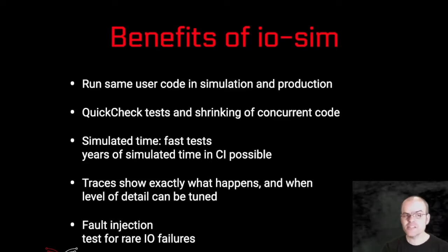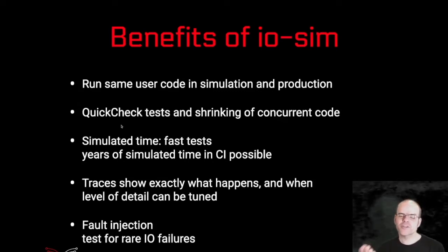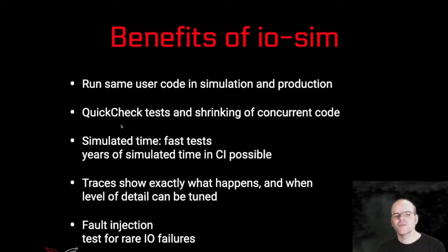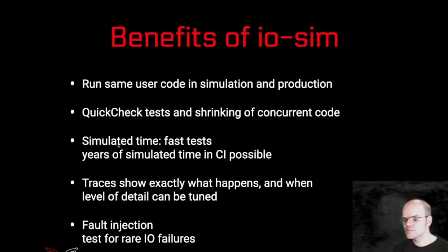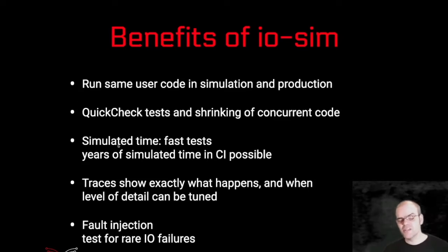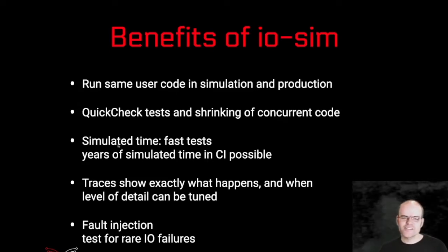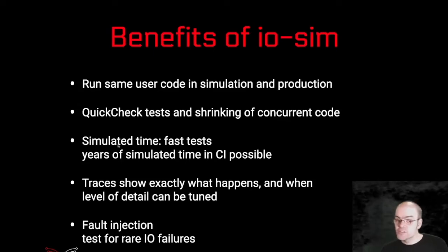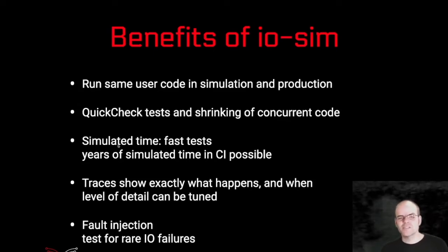That allows you to run the same user code in simulation for tests and in production, which is really what you want — you want to test the code that you're also running. With that deterministic simulation, you can efficiently run QuickCheck tests and do the shrinking to get those minimal counterexamples that tell you what's really going on, which is really nice for debugging. The simulated time allows you to run tests really, really quickly — you can have basically years of simulated time running in your CI tests on every pull request, which is really great because you want to find those rare test failures.